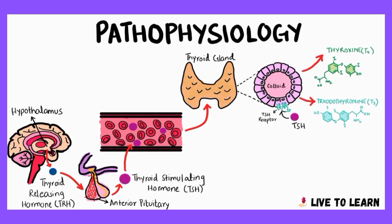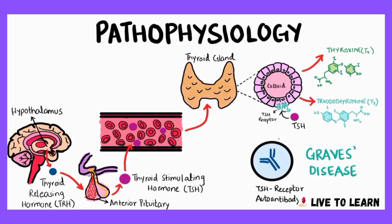In Graves' disease, TSH receptor autoantibodies are formed which act on the TSH receptors and stimulate the thyroid gland, causing it to become overactive and leading to overproduction of thyroid hormones.